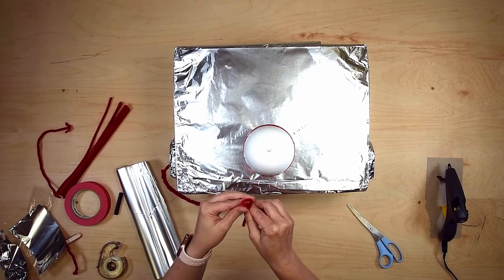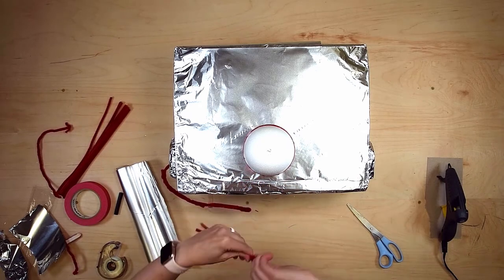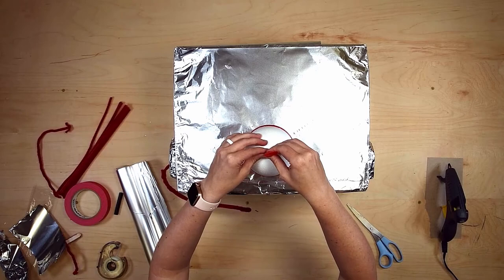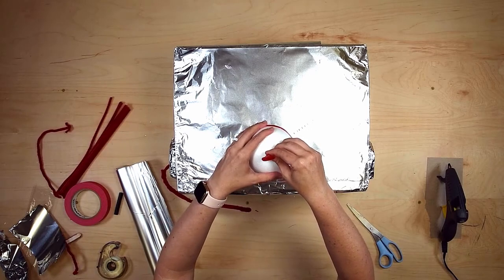I'm going to bend one pipe cleaner in half, forming a small circle in the middle, and twist. Now I've made my antenna and can insert it into the hole in the ball.